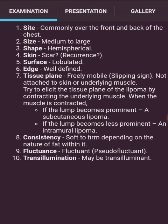Now lipoma. Lipoma is seen on inspection, commonly over the front and back of the chest. Size is medium to large, shape is hemispherical. A scar may be present or absent — indicating recurrence. Surface is lobulated, edge is well defined, tissue plane is freely mobile, and the slipping sign is present. It is not attached to skin or underlying muscle.